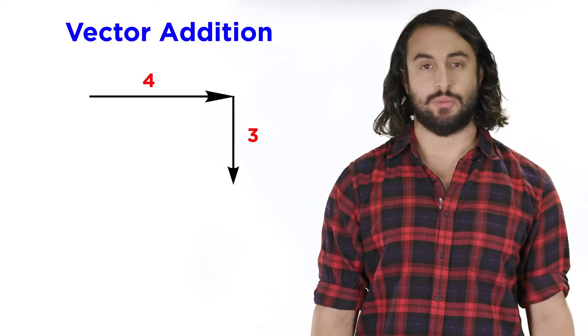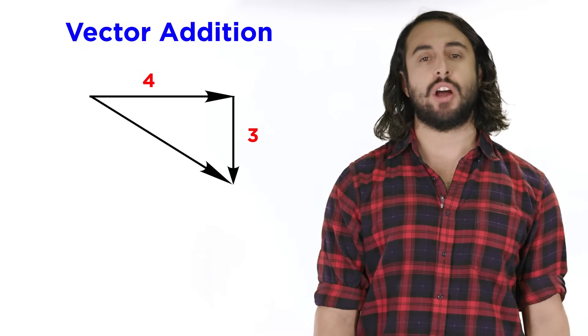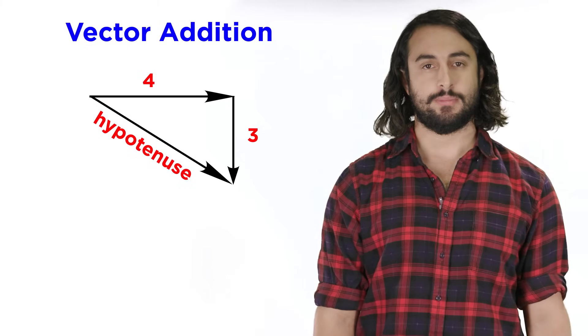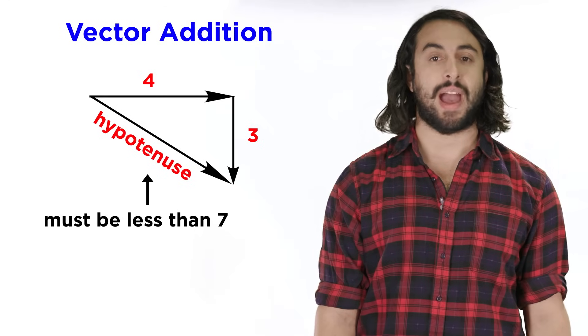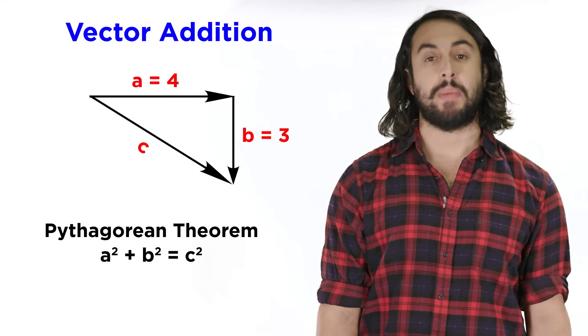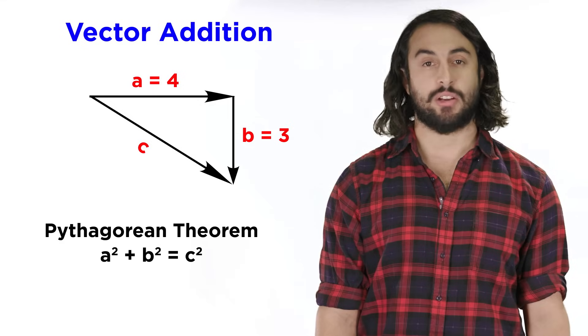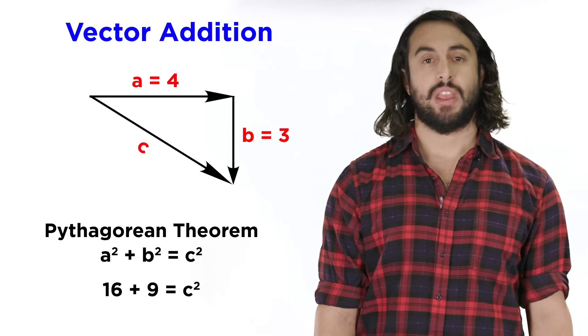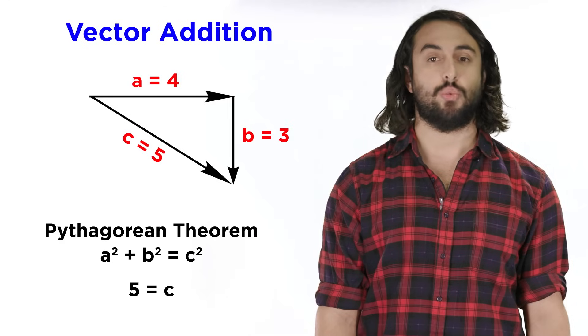Sometimes there is an angle between the two vectors, like these perpendicular vectors. In this case, when we draw the resultant vector, it will be the hypotenuse of a right triangle. The magnitude of this resultant vector is not the sum of the other two magnitudes. This one can be found by using the Pythagorean theorem, which we may remember from algebra class. A squared plus B squared equals C squared. Plug in A and B, square them, and find the sum, and then we take the square root to get C, which in this case will be five.